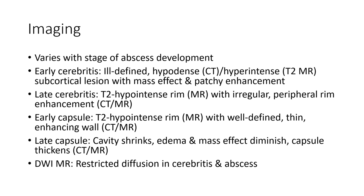Early cerebritis: ill-defined hypodense area on CT, hyperintense on T2/FLAIR, in the subcortical region with mass effect and patchy enhancement. Late cerebritis: T2 hyperintense ring with irregular peripheral ring enhancement on CT.